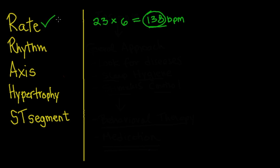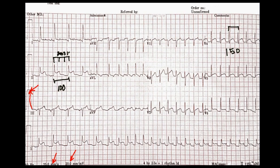Let's look at rhythm next. For rhythm, we're looking at P waves and QRS complexes, and how regular things are. At the beginning, things are generally pretty regular. Whereas at the end, we've got some irregularity — the distance between beats here is a little different than the distance between beats here. There seems to be a speeding up.